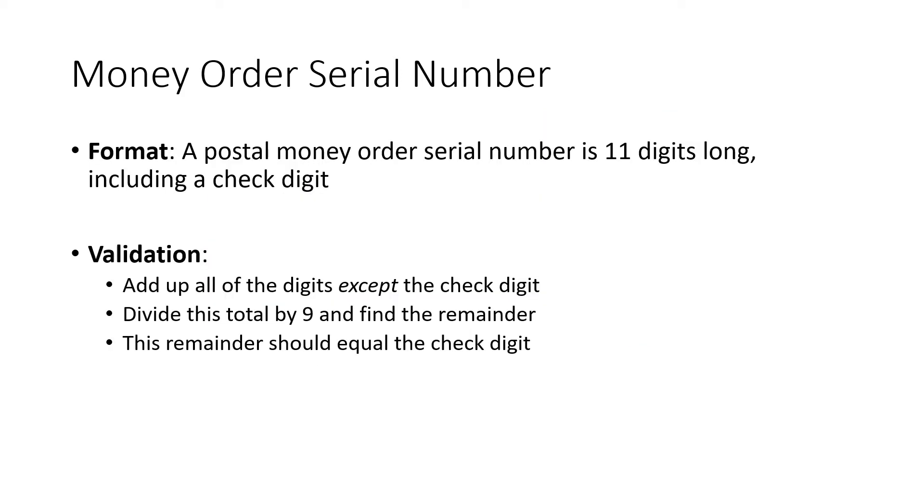How does the system work? Remember, we always have two pieces of an ID number system. We've got a format that tells us the structure of the number. In this case, a money order serial number is 11 digits long and that includes a check digit. And then the validation process goes like this: we add up all of the digits except the check digit, we divide that total by 9 and find the remainder, and that remainder should equal the check digit. We've got a little calculation, a little process that we have to go through. And if that process works out, then our serial number is valid.